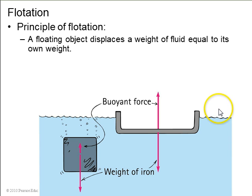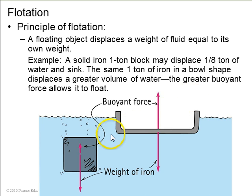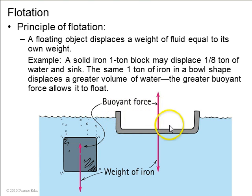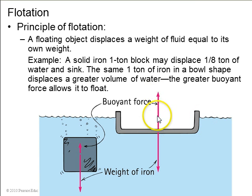The principle of flotation is that a floating object always displaces a weight of fluid equal to its own weight. For example, a one-ton block of iron does not displace one ton of water because iron is more dense than water, so it just sinks to the bottom. However, if you make that iron into the shape of a great big bowl and dip it into the water, a whole big volume of air will displace some water, and when one ton of water is displaced, the buoyancy force equals the weight of the iron and you can float your boat.